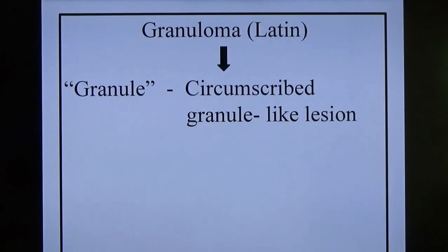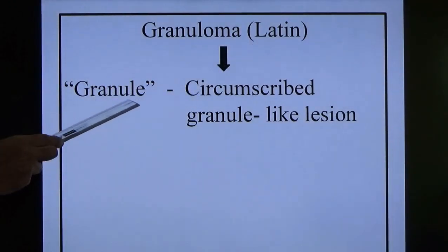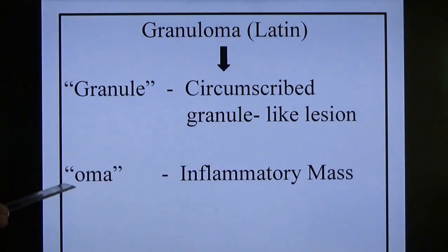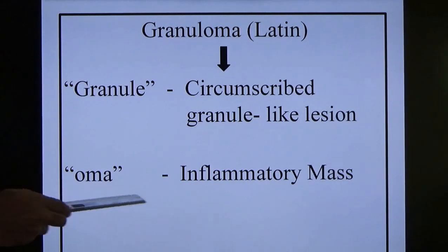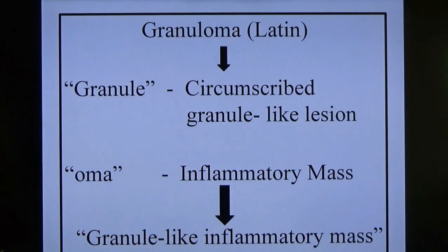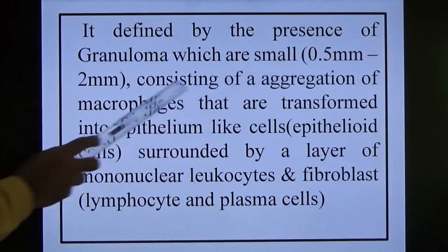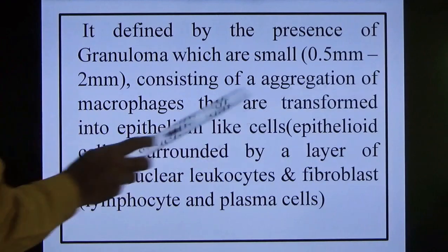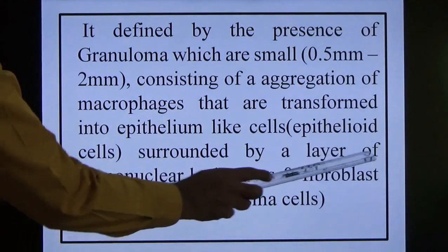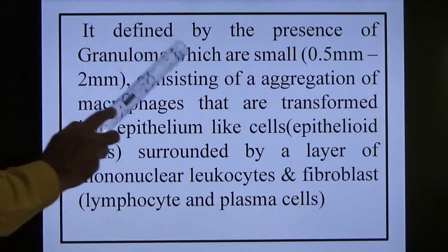Chronic granulomatous inflammation — let me explain the word meaning. Granuloma is taken from Latin. 'Granule' means circumscribed granule-like lesions, and 'oma' means inflammatory mass. So the word meaning is granule-like inflammatory mass. The definition: it is defined by the presence of granuloma, which is very small — 0.5 to 2 mm — consisting of aggregation of macrophages that are transformed into epithelium-like cells, called epithelioid cells, surrounded by a layer of mononuclear leukocytes, fibroblasts, lymphocytes, and plasma cells.